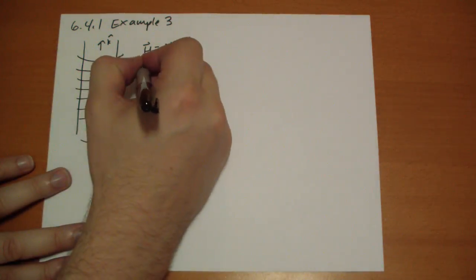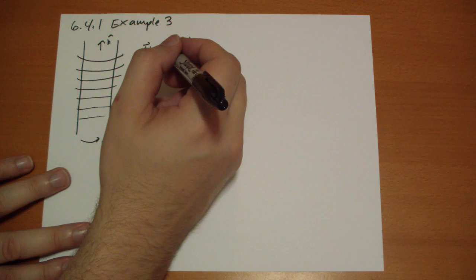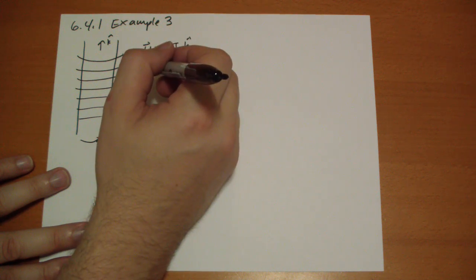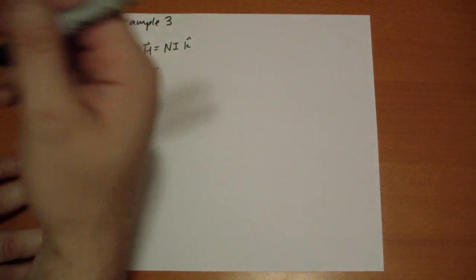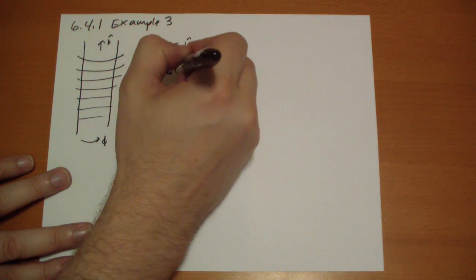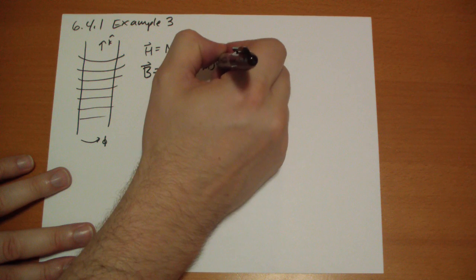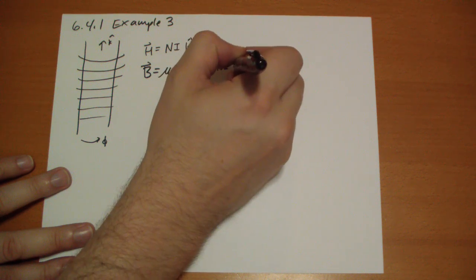So the B vector is going to be proportional to the H vector. But we're given chi m, the susceptibility not the permeability. So we have to put it in this form of the H vector, which is n i k hat.